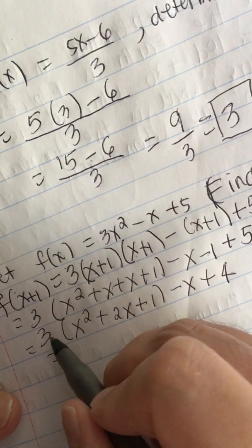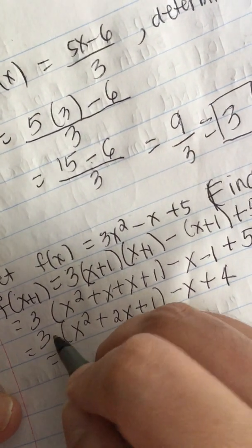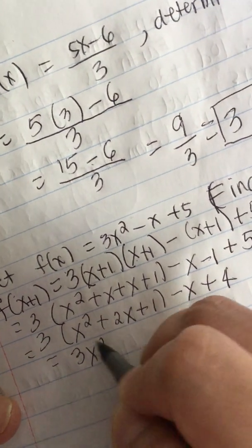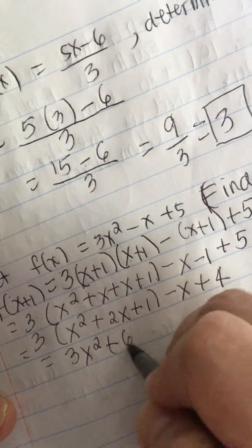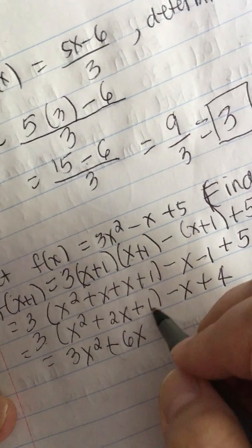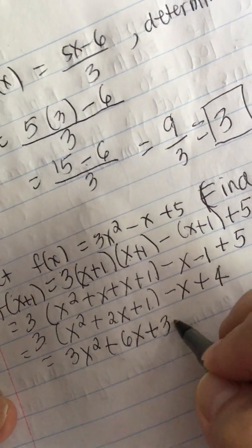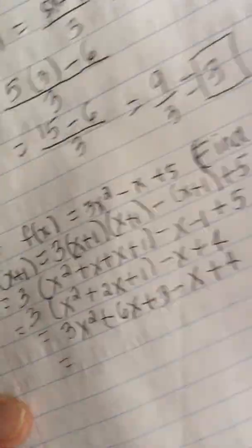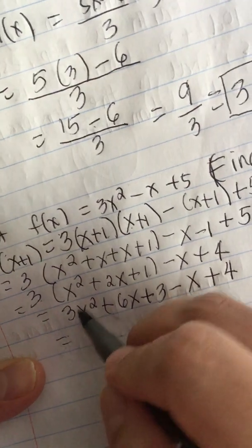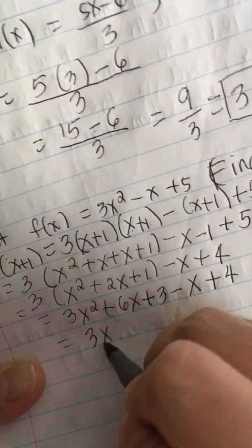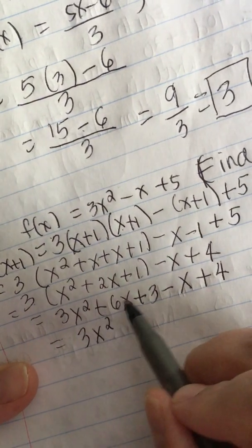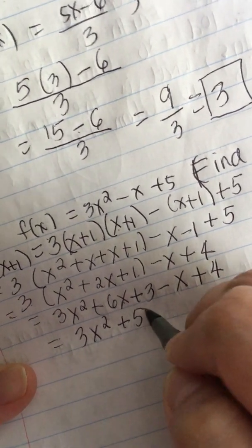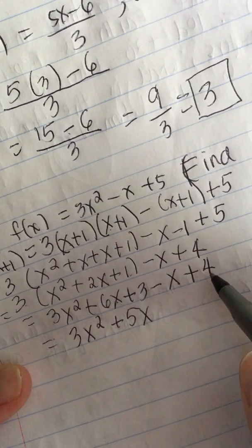We distribute this 3, so 3 times x squared is 3x squared, 3 times 2x is 6x, 3 times 1 is 3 minus x plus 4. Combine like terms, we have 3x squared, 6x minus x is 5x, plus 3 plus 4 is plus 7. So this is your answer.